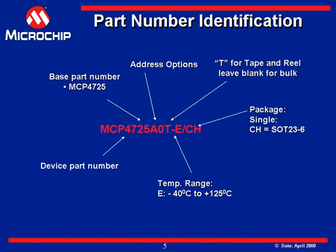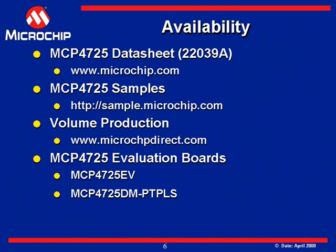The ordering information for the MCP4725 12-bit non-volatile DAC is shown on this slide. This device is available over an extended temperature range from minus 40 degrees to 125 degrees Celsius. The MCP4725 is currently available for sampling and volume production — please visit the Microchip website for more information and to order samples.